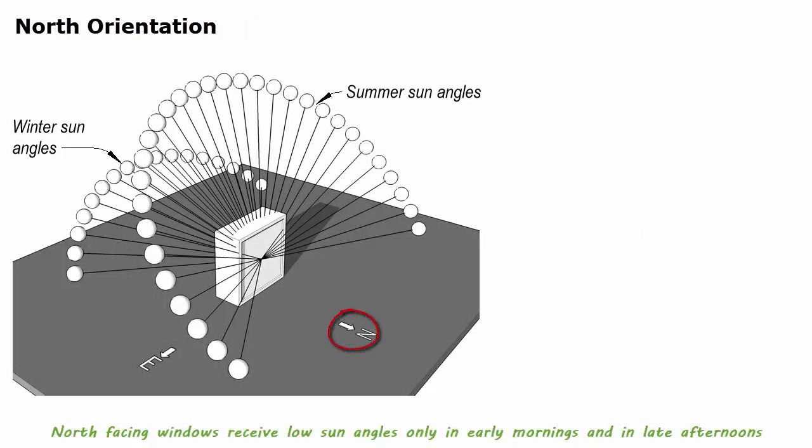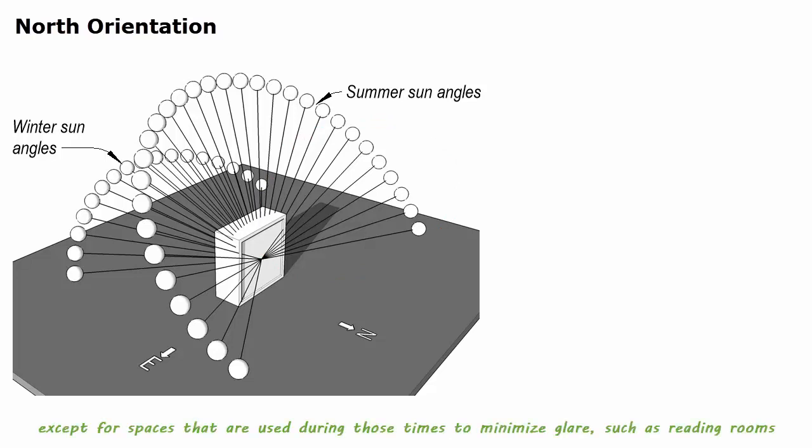North-facing windows receive low sun angles only in early mornings and in late afternoons during summer months. Typically, shading is not needed for most commercial buildings, except for spaces that are used during those times to minimize glare, such as reading rooms in the library.